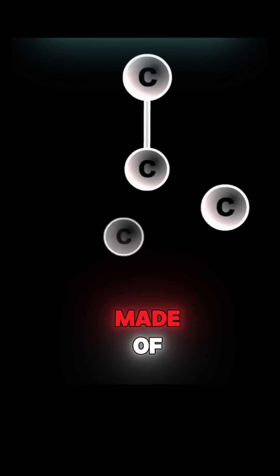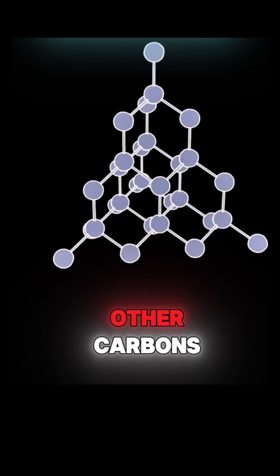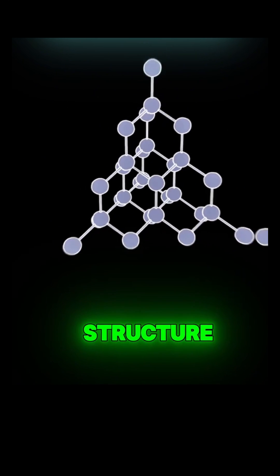Both diamond and graphite are made of carbons. In diamond, each carbon binds to four other carbons to form a tetrahedral structure.